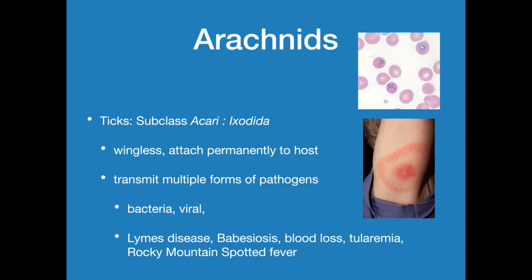The arachnids — ticks are up there with mosquitoes. After mosquitoes, ticks are probably one of the organisms that really spread a lot of disease. They spread Lyme disease, babesiosis, cause lots of blood loss, tularemia, and Rocky Mountain spotted fever — transmitting lots of different forms of pathogens. We're going to do some blood cell comparisons because babesiosis looks a lot like malaria but actually is not — and that's one of the projects we're going to do in class.